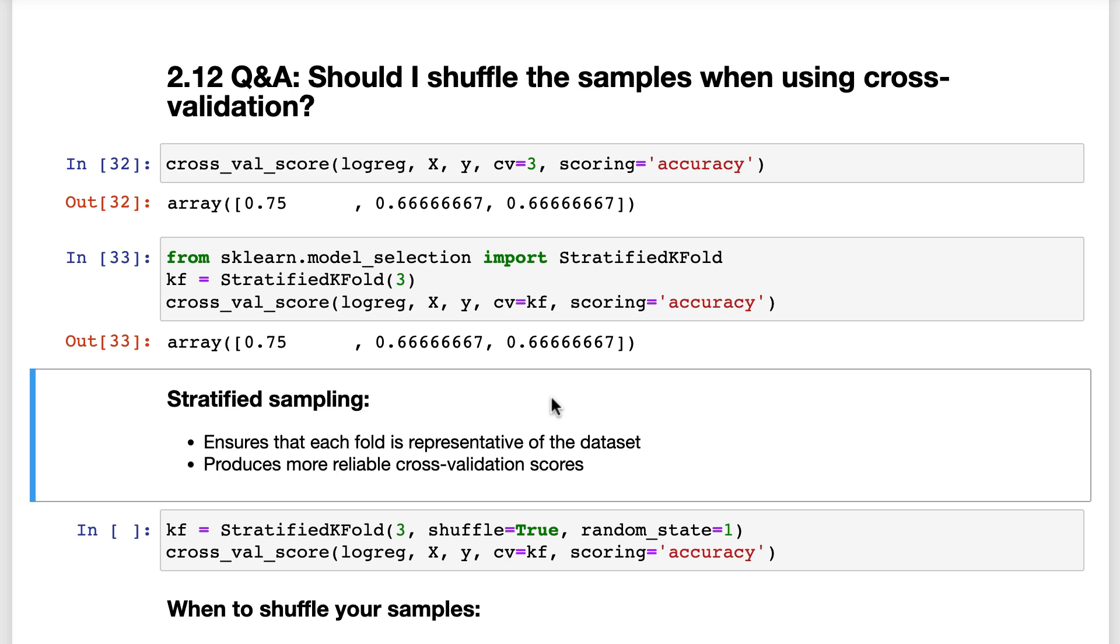In other words, it ensures that each fold is representative of the entire dataset. Stratified sampling is desirable because it produces more reliable cross-validation scores. And again, scikit-learn will do this for you by default.